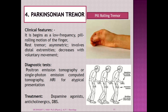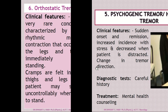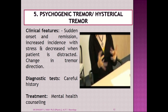Fourth is the very common Parkinsonian tremor. It begins with a low-frequency pill-rolling movement of the fingers. It is a resting tremor, asymmetric, involves the distal extremities, and decreases with voluntary movement — when the patient is doing movement the tremor reduces, but when at rest the tremor increases. To identify it, we need PET or single-photon emission computed tomography and MRI. Treatment will be dopamine agonists, anticholinergics, or deep brain stimulation. You also find a shuffling gait with small steps.